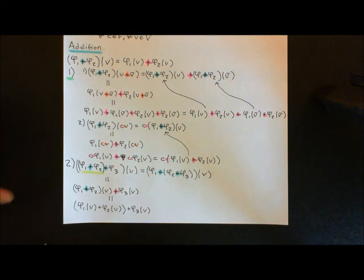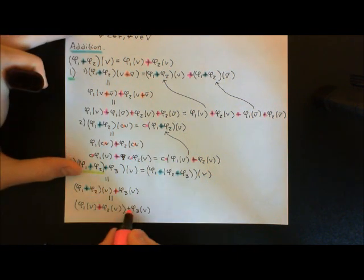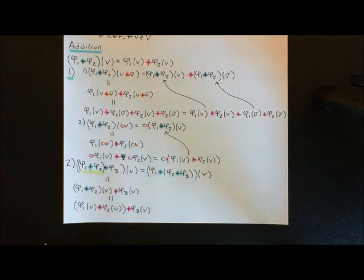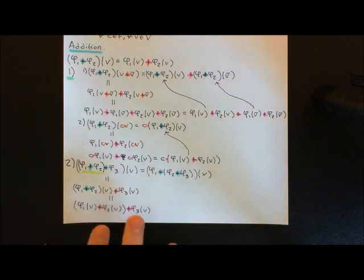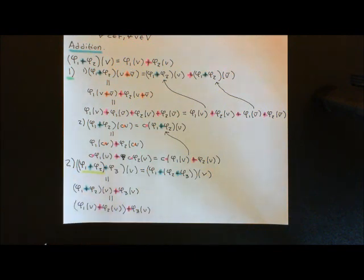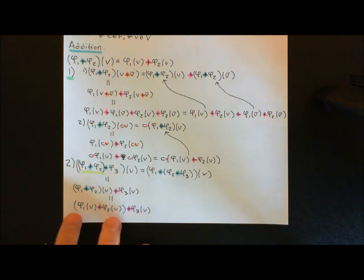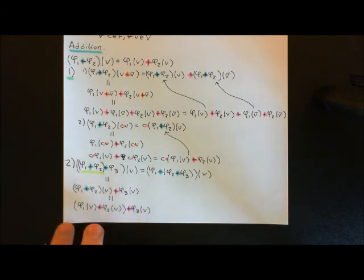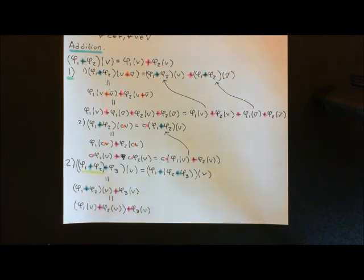All of these additions — this addition and this addition — are additions in the field, capital F. Now you can probably see where this is going, how this proof is going to end, because we know that addition in the field obeys associativity. So it really does not matter that the brackets are around φ1 of v plus φ2 of v; we could equally well put them around φ2 of v plus φ3 of v, and indeed if we do it the other way we'll just get that.